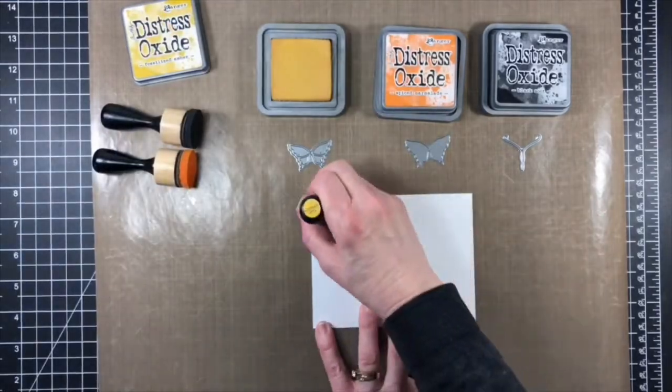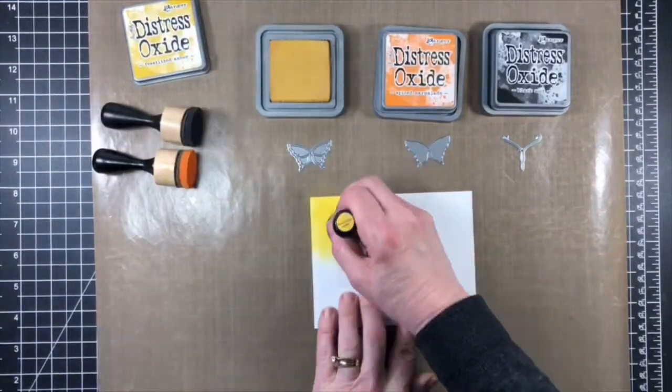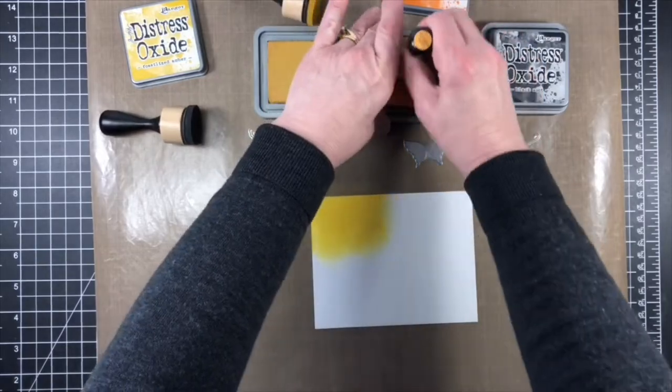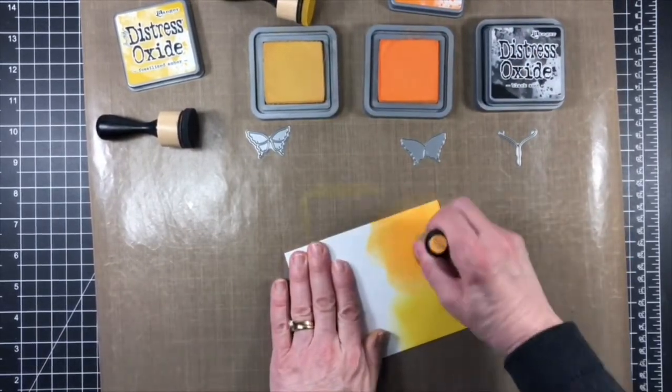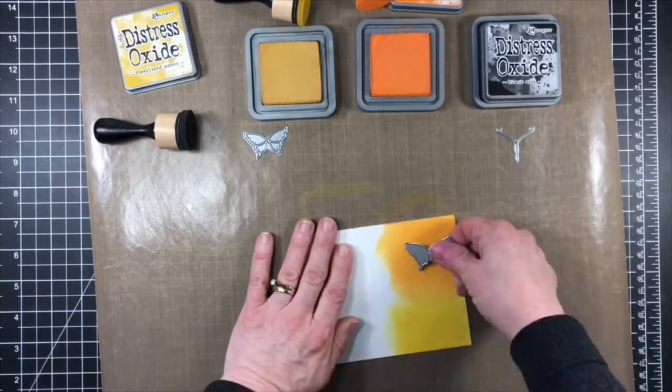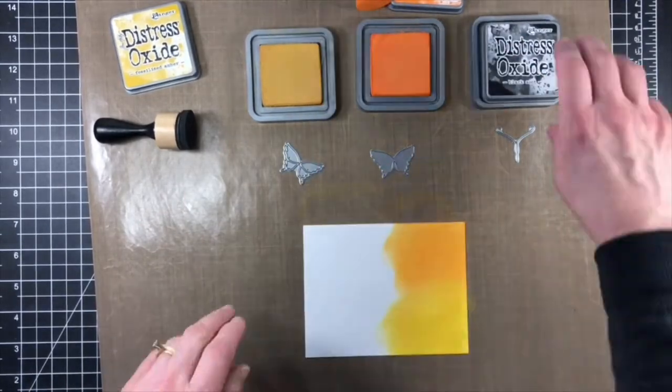While these were drying I set to work on my butterfly. I started by blending a panel of Bristol Smooth with fossilized amber, spiced marmalade and black soot distress oxide. I flicked on some water and picked up some of the color with paper towel.